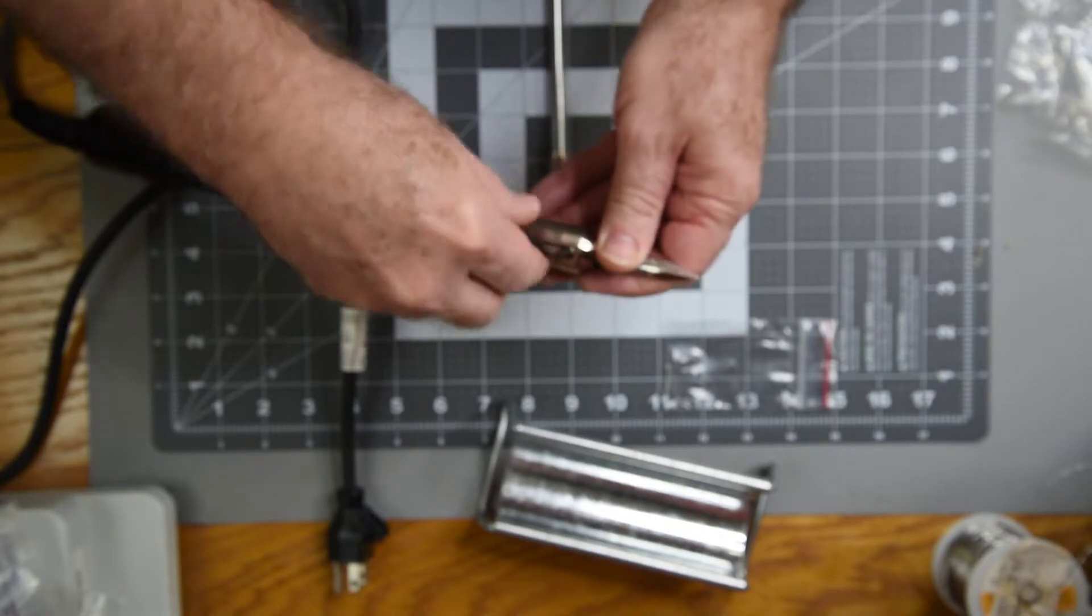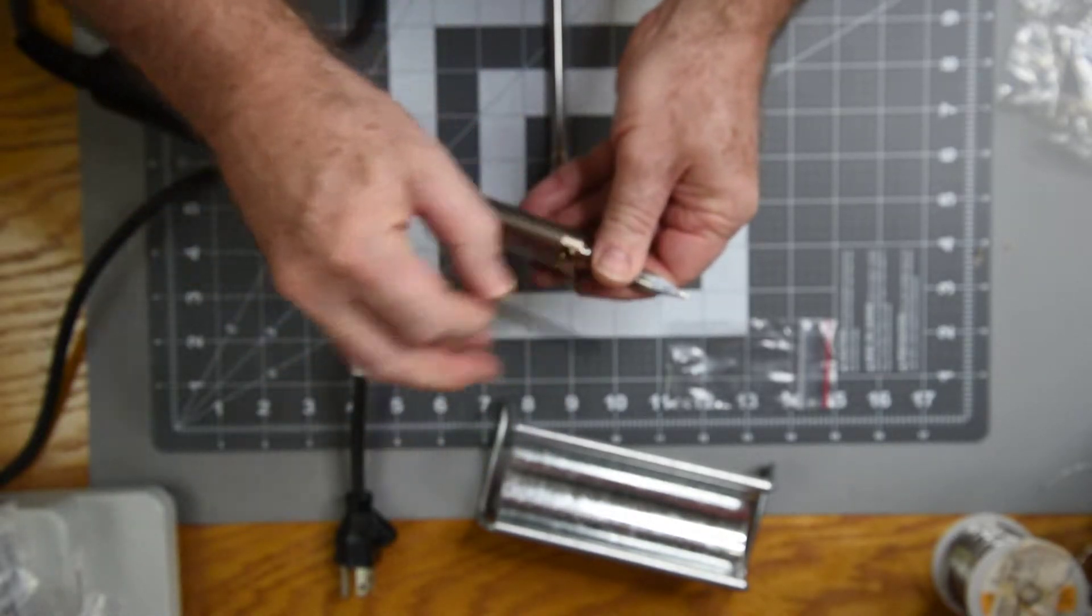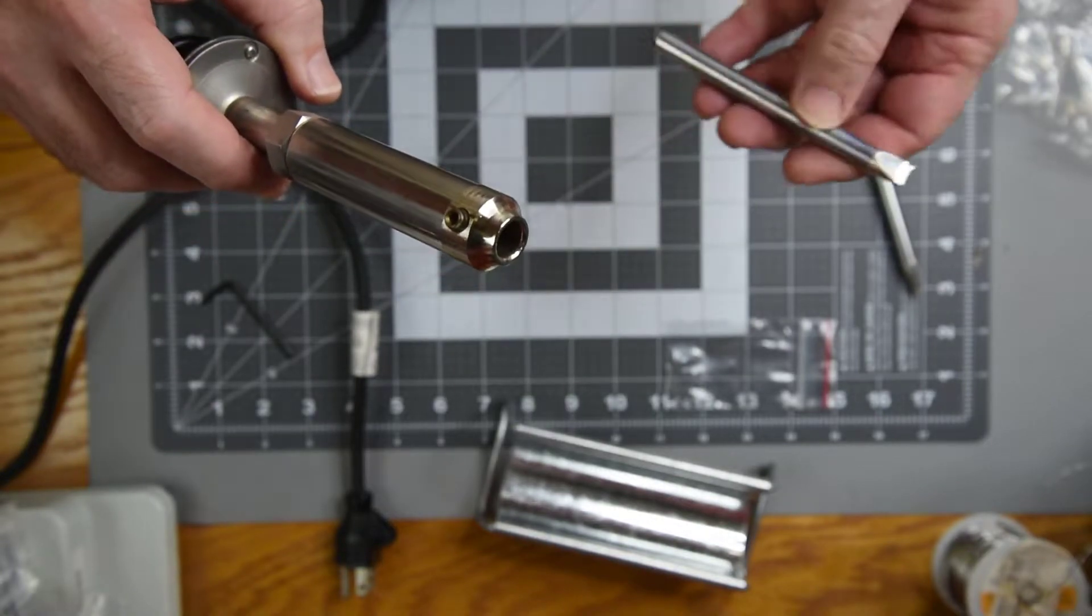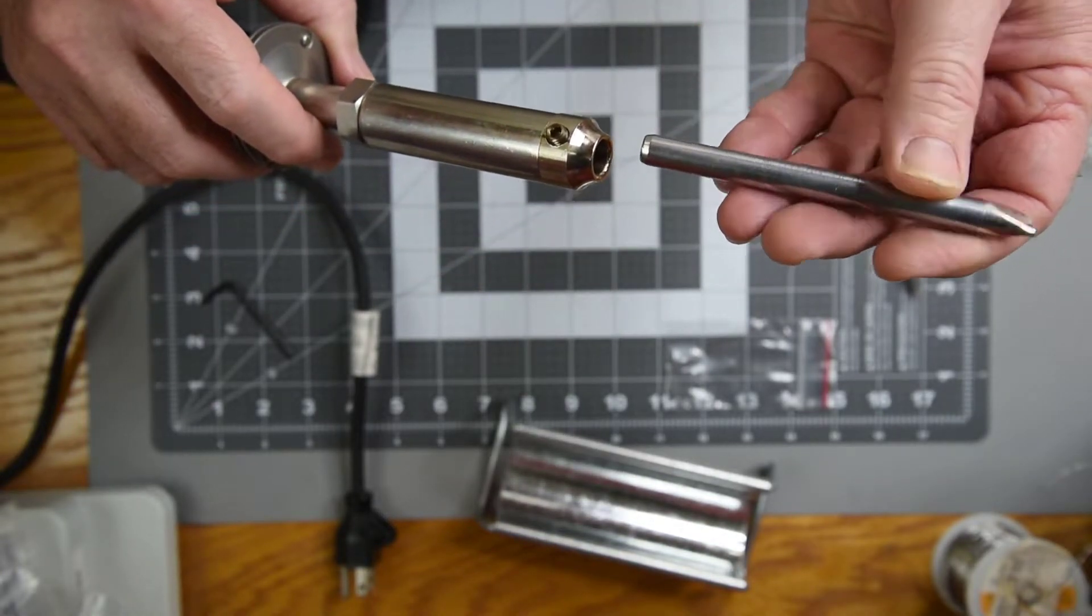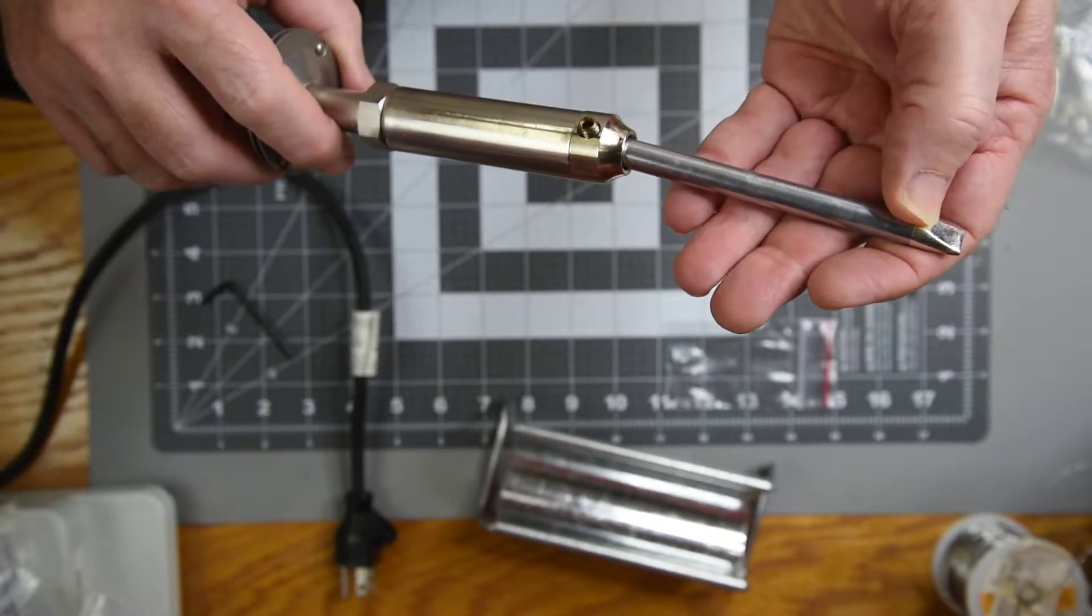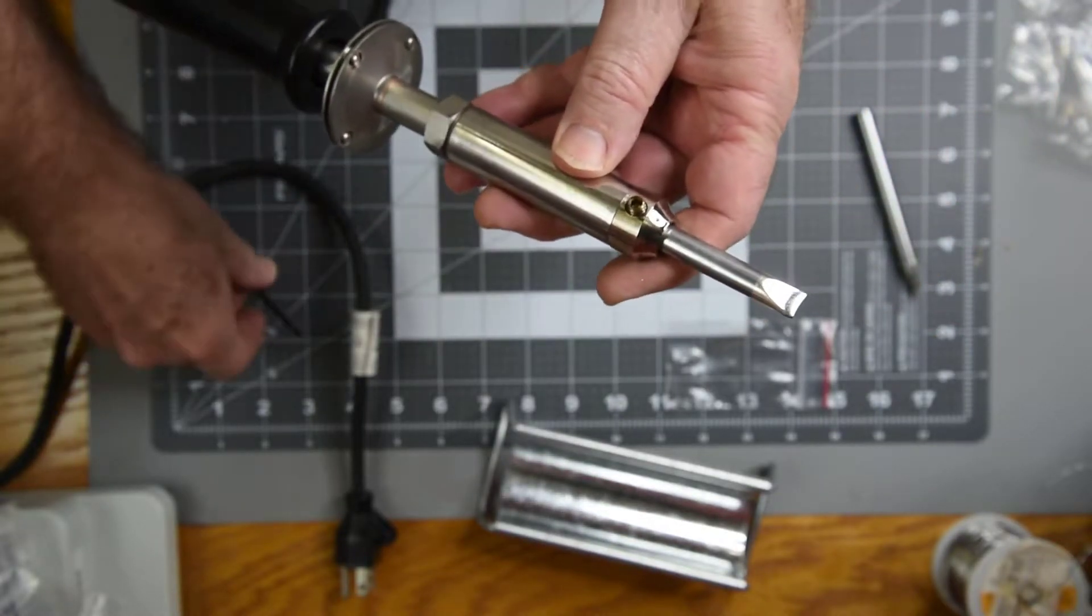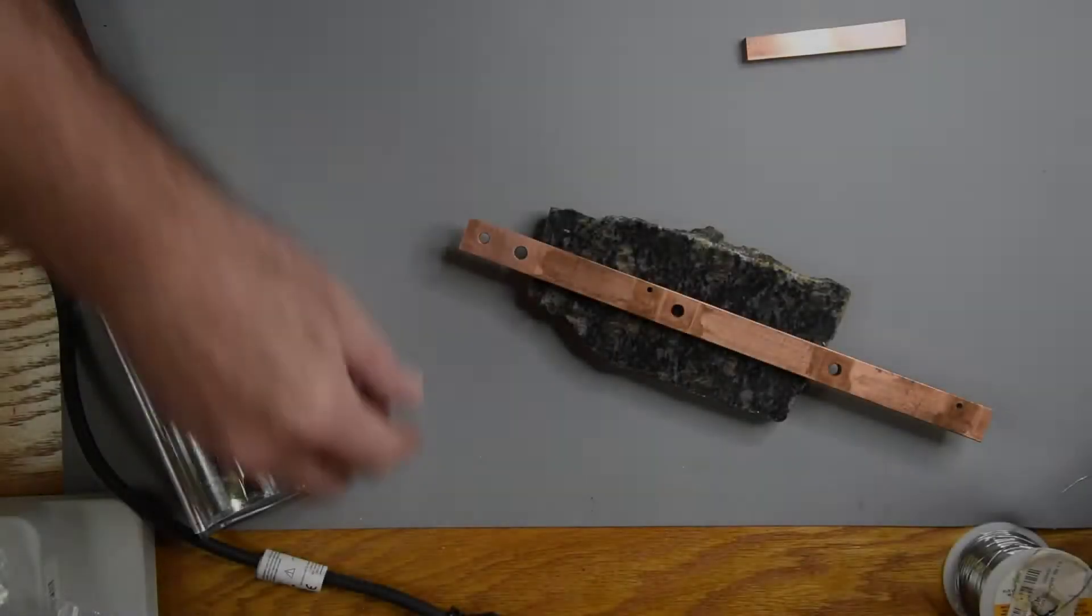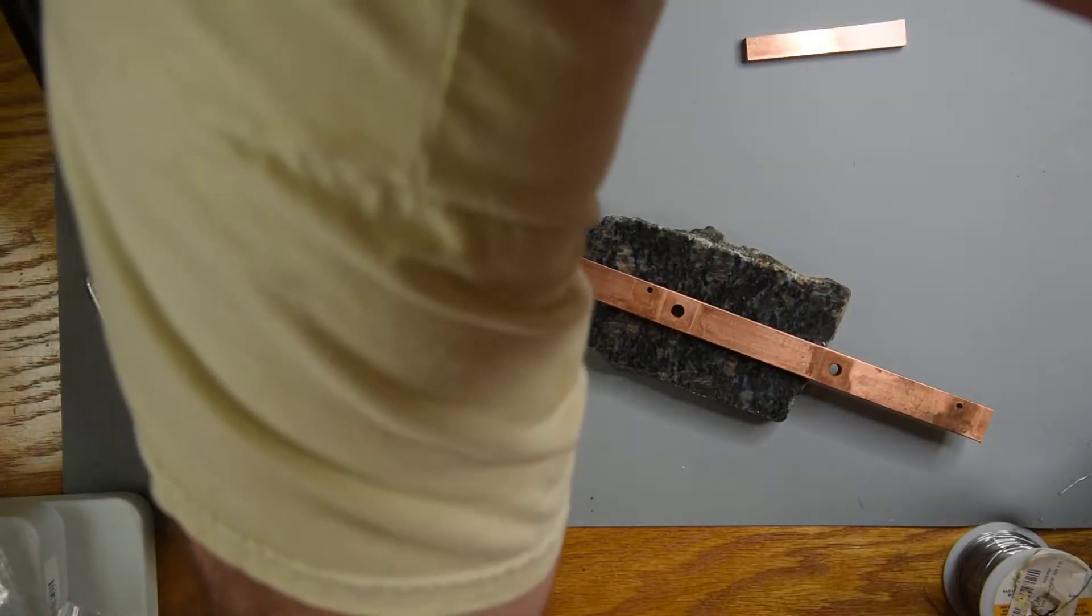Now the iron comes with a diamond shaped tip. I ordered the chisel tip because I thought it might give better heat transfer to the flat copper I will be soldering. Well, let's fire it up and see what it will do.